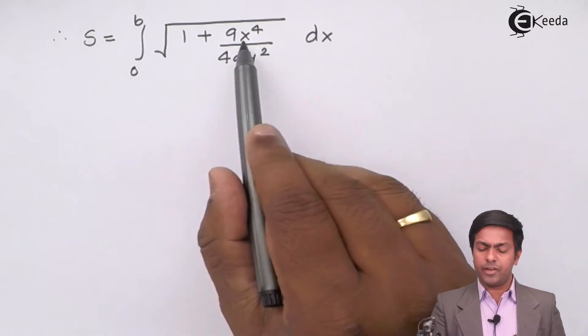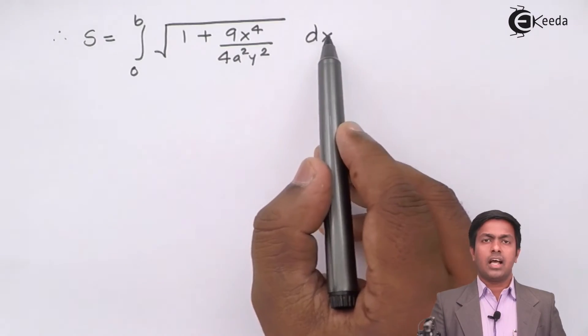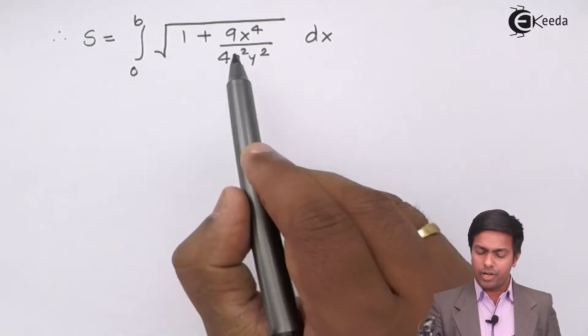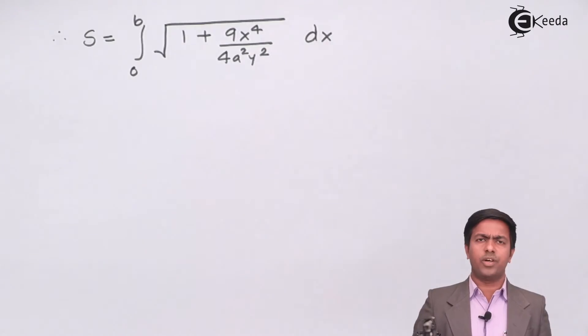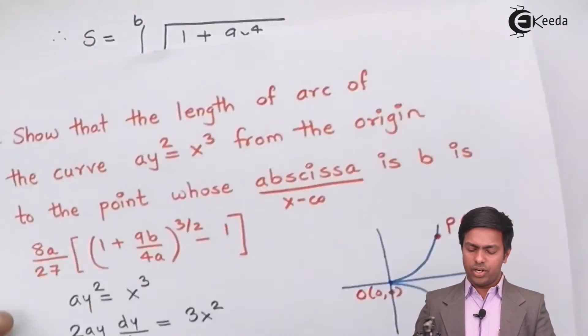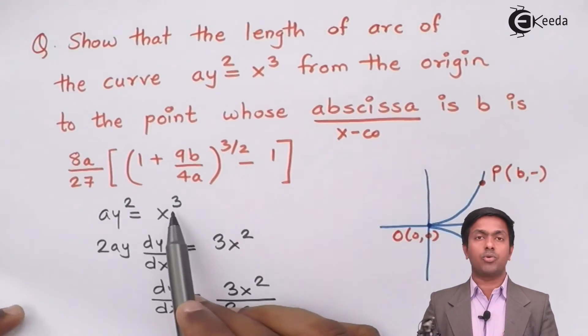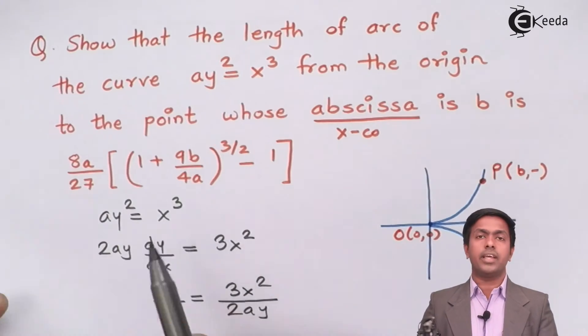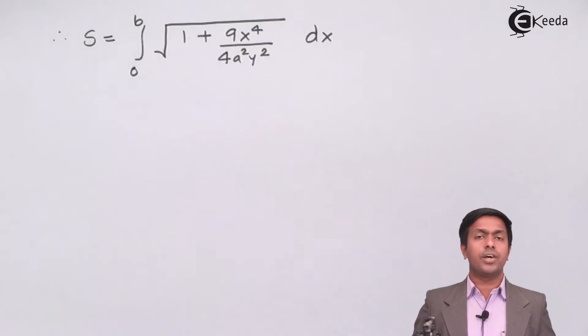Now since I am integrating with respect to x I should have the variables as x but now here we have y square. So what to do with the y square? So don't worry just observe the equation once again. So here we have a y square equal to x cube. So we can say that y square is x cube upon a and I will put that value over here.